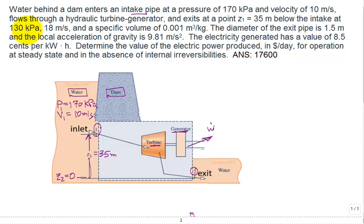Then you have the pressure. P2 is given to be 130 kPa and V2 of 18 meters per second of velocity. And it has a specific volume. I'm going to put the specific volume of the water right here, V, and it's 0.001 meter cubed per kilogram.